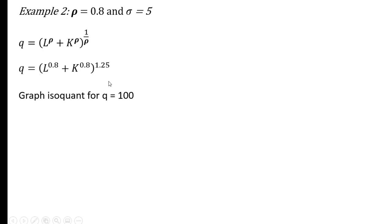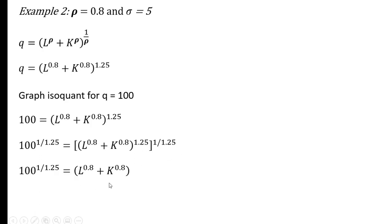All right, let's look at another example. In this example, rho equals 0.8. In that case, the elasticity of substitution is 5, making our substitution for rho here. 1 divided by 0.8 leaves us with this all raised to the 1.25 power. Plugging in 100 for q, and now we're going to raise both sides to the 1 divided by 1.25 power. So doing that to both sides. Here, 1.25 times its reciprocal will just be 1, and you're left with this.